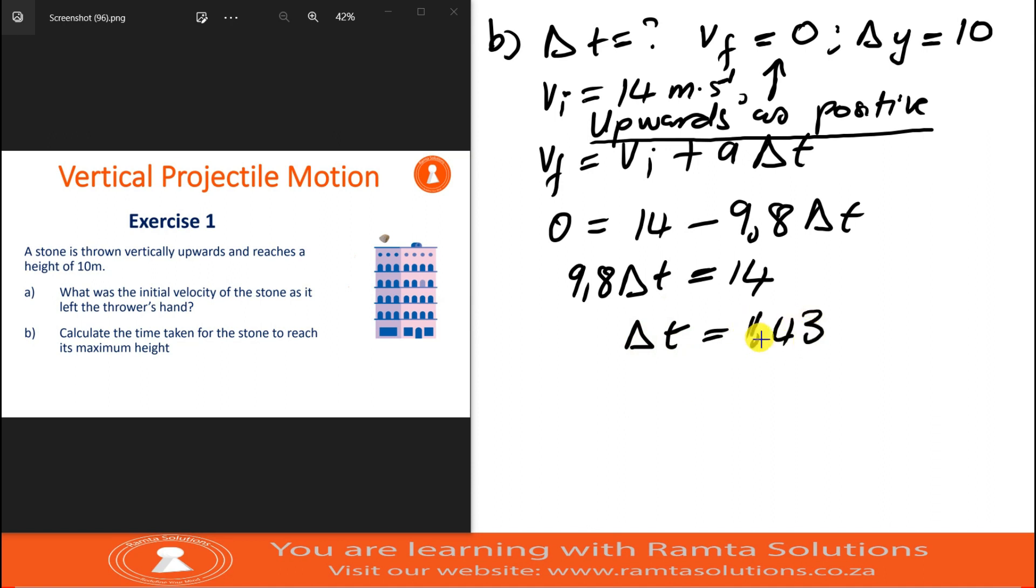Or you can use this formula here: delta y equals vi delta t plus half a delta t squared. It should also give you the same answer we got here. All right guys, bye bye.